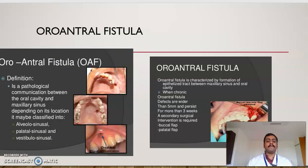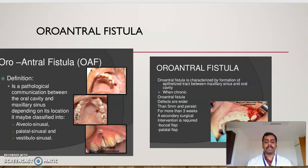Oroantral fistula is defined as an abnormal pathological communication between the oral cavity and the maxillary sinus. Depending on its location, it may be classified into alveolo-sinusal, para-alveolo-sinusal, and vestibulo-sinusal. The oroantral fistula is characterized by the formation of an epithelialized tract between the maxillary sinus and oral cavity. When chronic oroantral fistula defects are wider than 5 mm and persist for more than 3 weeks, a secondary surgical intervention is required.